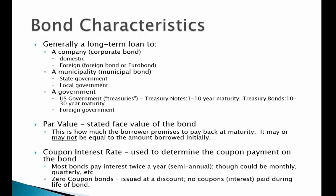The borrower could also be a municipality, so it might be a municipal bond to a state government or a local government. The distinction with municipal bonds is that they're tax-free in the state that they're issued — tax-free both in terms of state taxes and federal taxes. And then also a long-term loan to governments, so it could be the U.S. government — we call those treasuries.